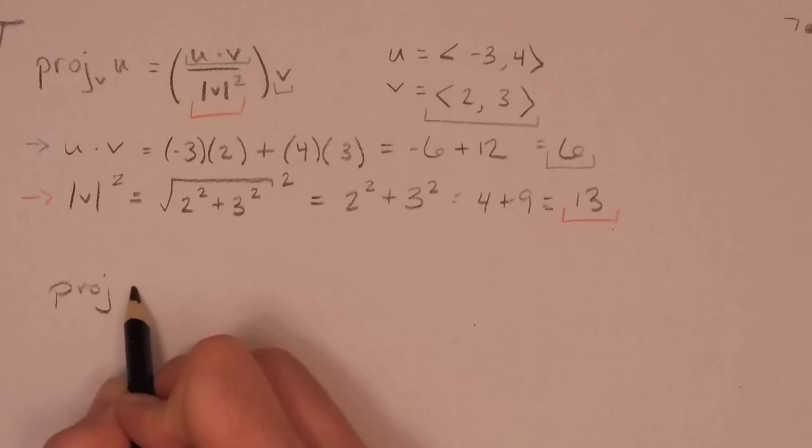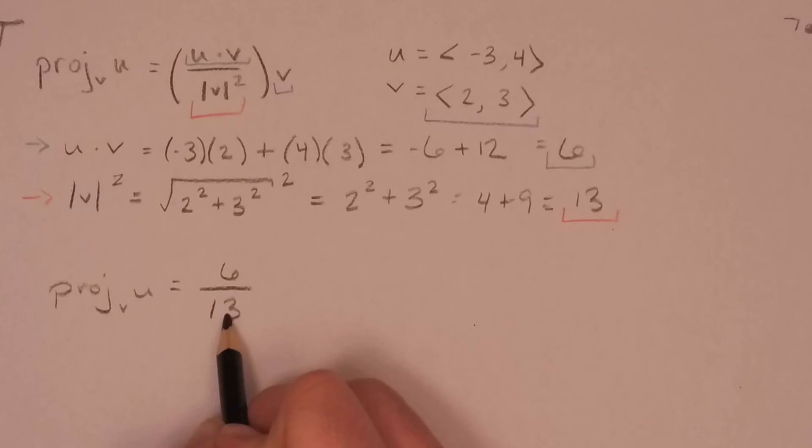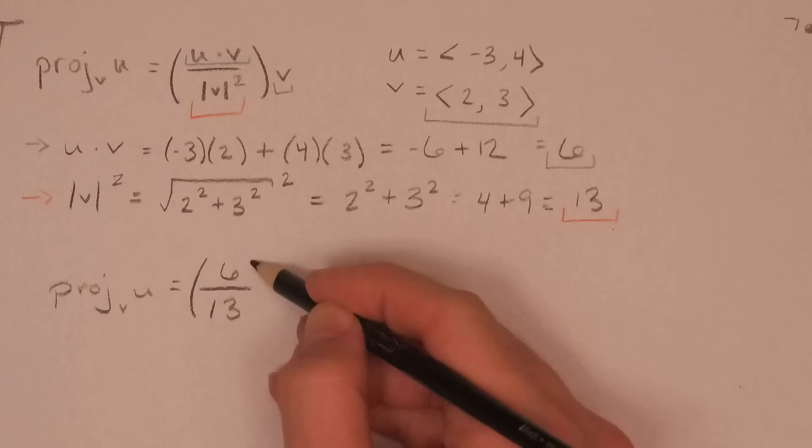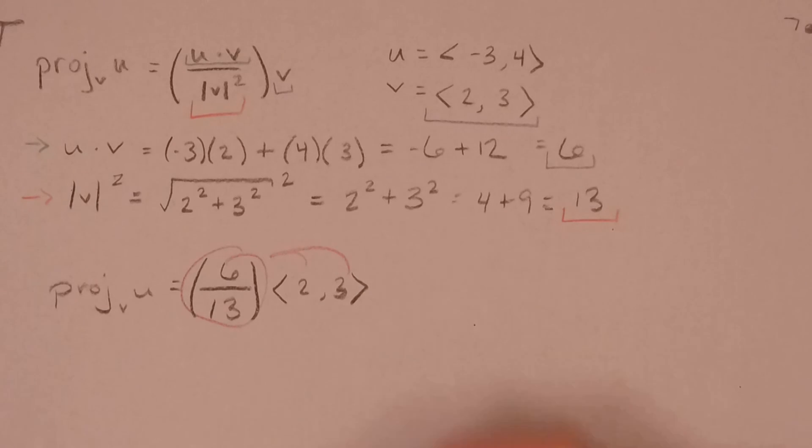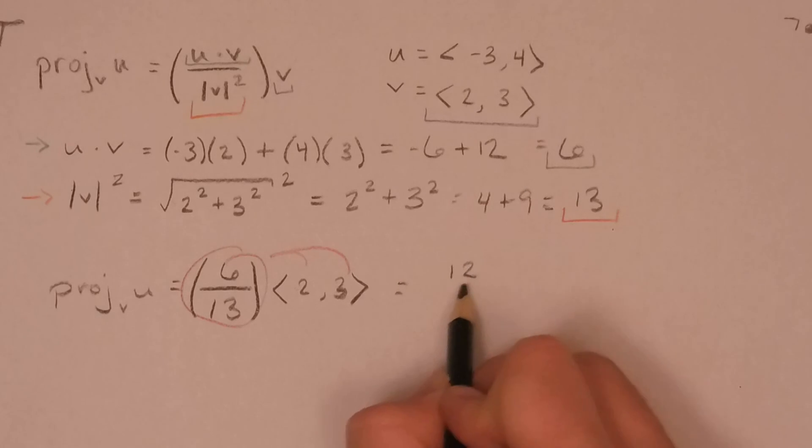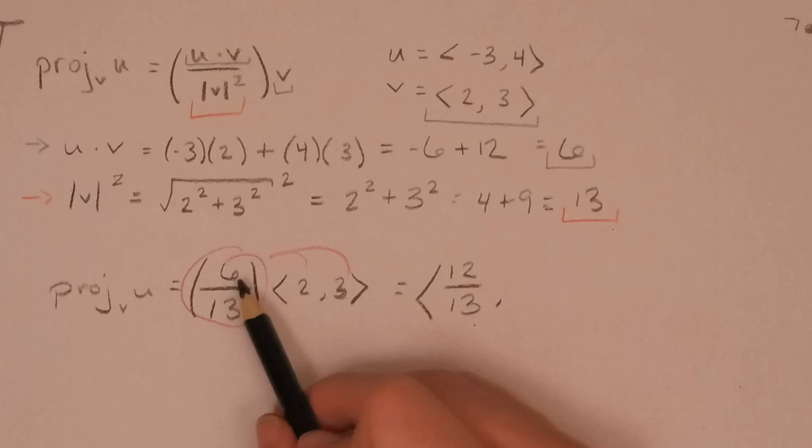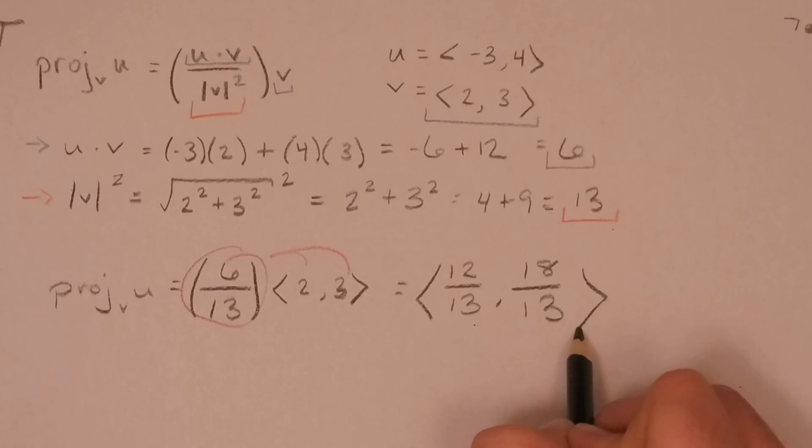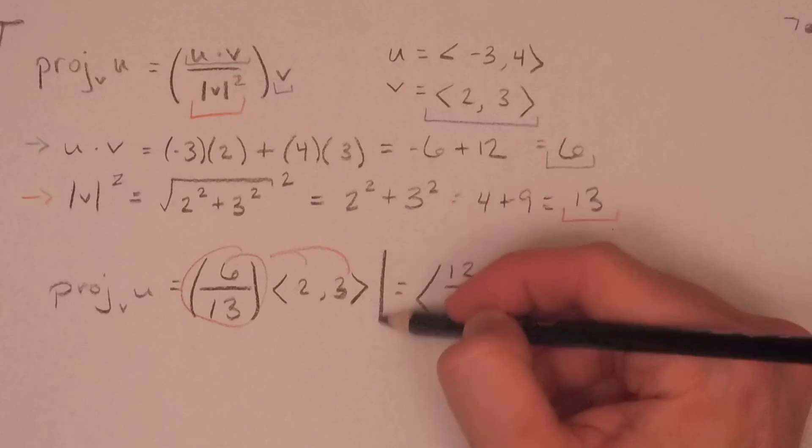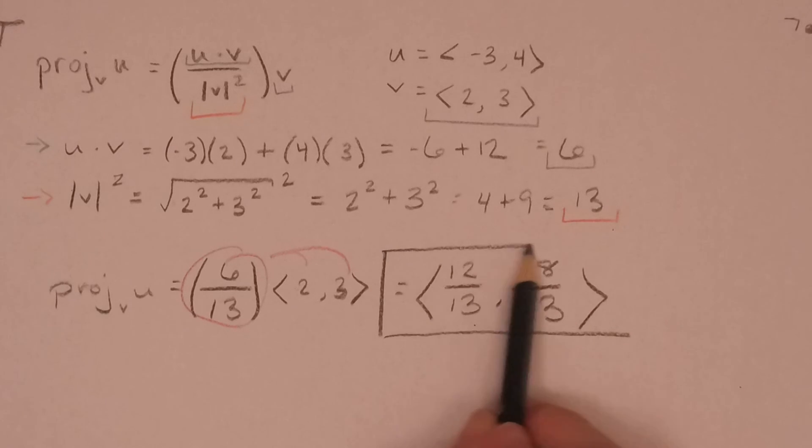The projection of u on v is equal to 6 divided by 13. And this quantity is being multiplied by a vector v, which is 2, 3. I almost had a typo. Vector 2, 3 is vector v. And so here we know on scalar multiplication for vectors we're allowed to distribute this in. And so we're going to do exactly that. And so 6 by 2, this is going to give us a 12 over 13. And here, that's going to give us 18 over 13. And neither of these reduced, and so we leave it just like that. And there you have it. The final answer, and the final answer is right here, the projection of u on v.